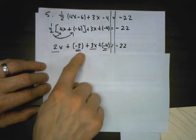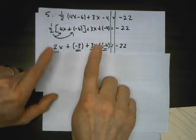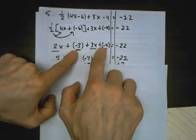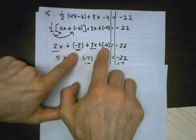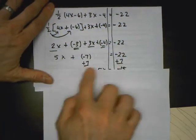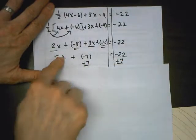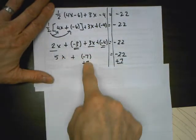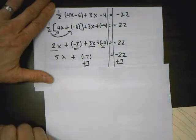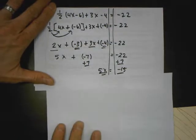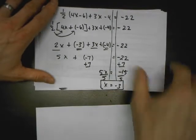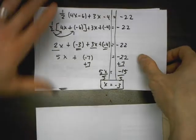Half of 4x is 2x. Half of negative 6 is negative 3. Combine my two x's: 2x and 3x is 5x. Combine negative 3 and negative 4: negative 3 plus negative 4 is negative 7. Add 7 to both sides because I'm isolating the variable — the opposite of negative 7 is to add 7. The last thing we do is divide, and my solution is x equals negative 3.